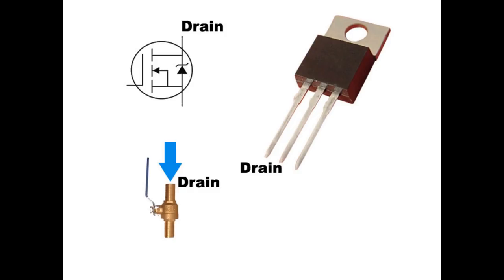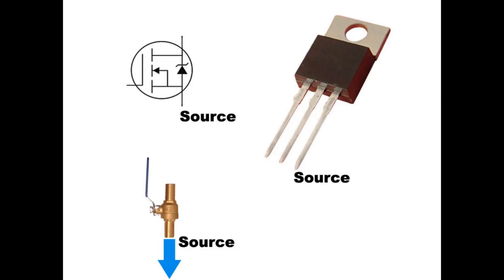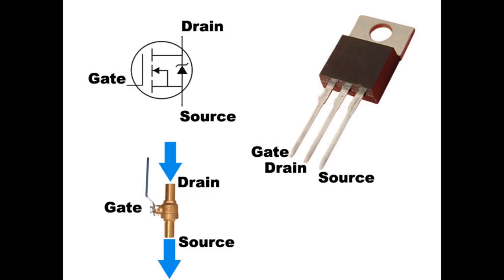Drain is the pin that current will drain into. Source is the pin that current will flow out of. And gate is the pin that will turn the transistor on and off, kind of like how a water gate valve will control the flow of water.